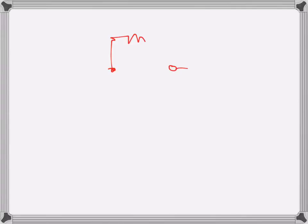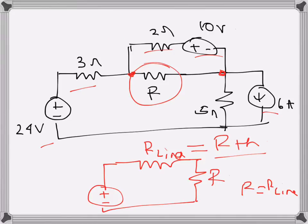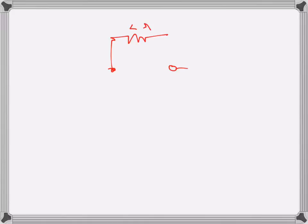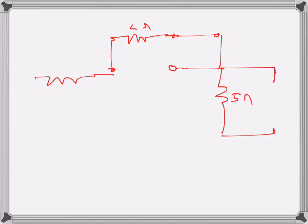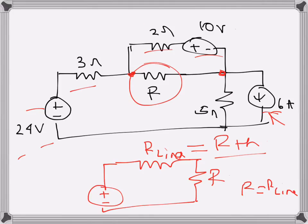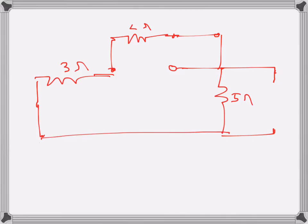Let's find the Thevenin resistance. We remove R from the circuit, and then we need to make all sources inactive: the two voltage sources will be short-circuited and the current source will be open-circuited. So we have 2 ohms here, the voltage source is short-circuited, then 5 ohms, then the current source is open-circuited, then 3 ohms, and the 24-volt source is also short-circuited. We now find the resistance seen from the open terminals.